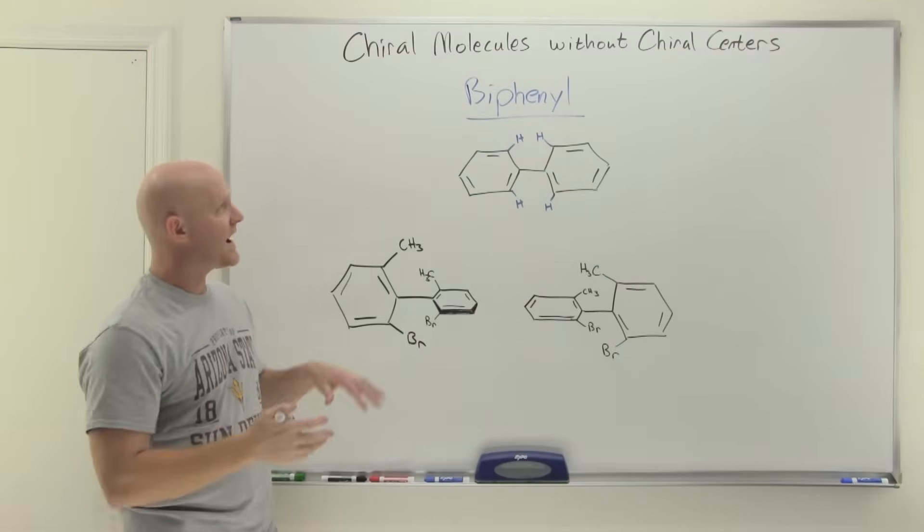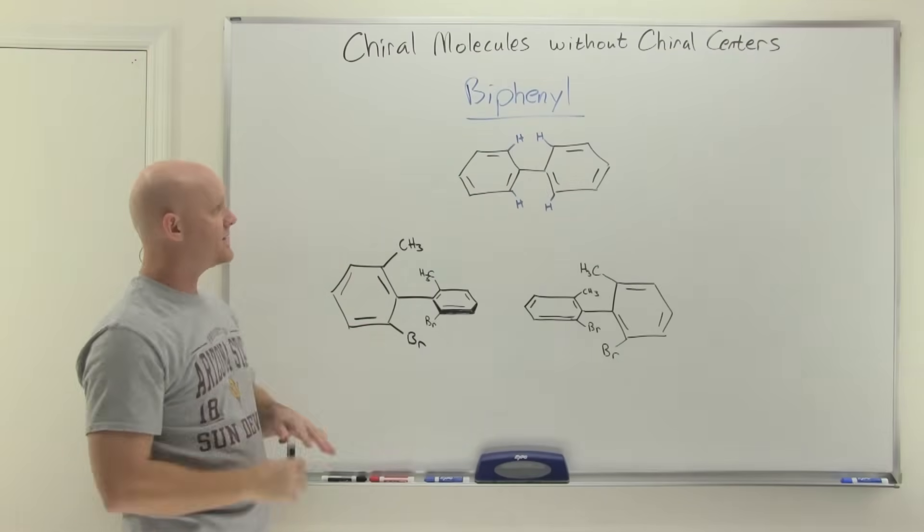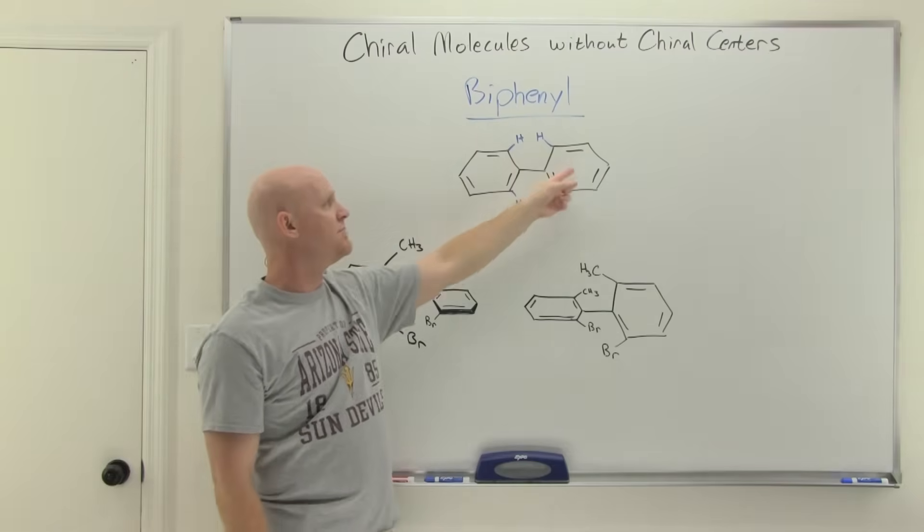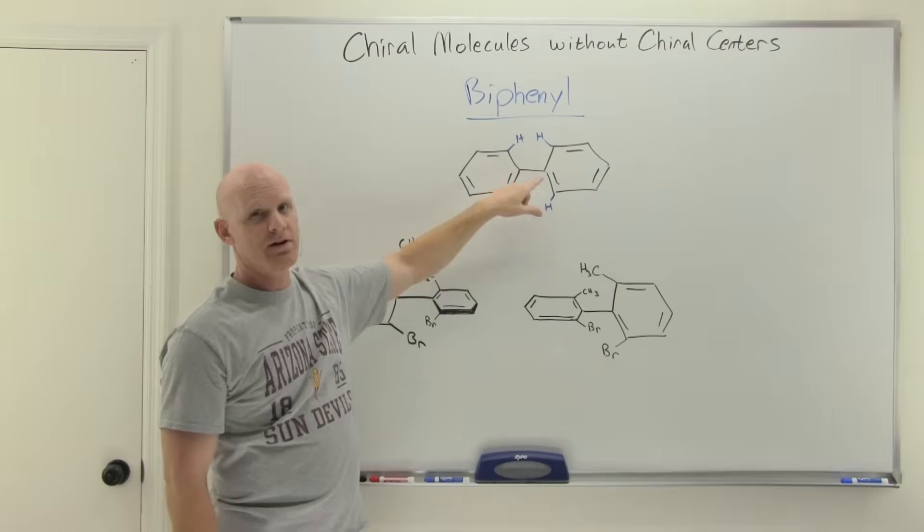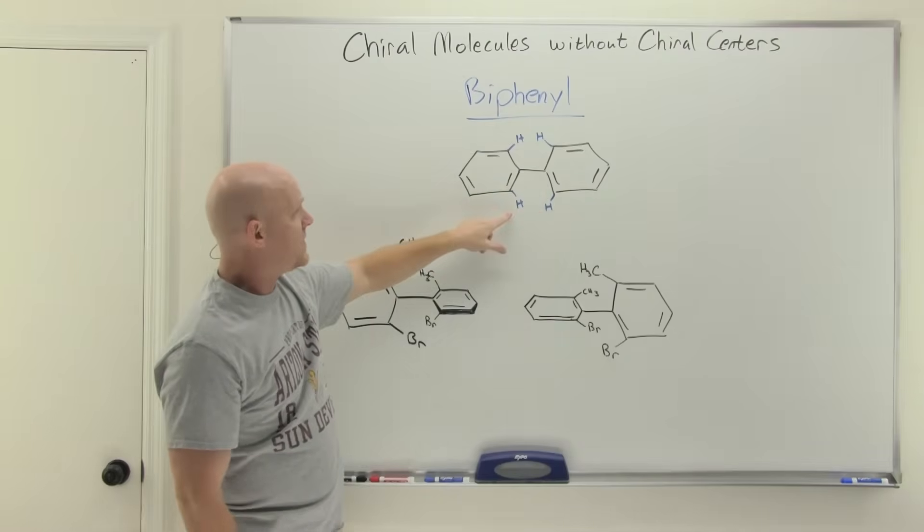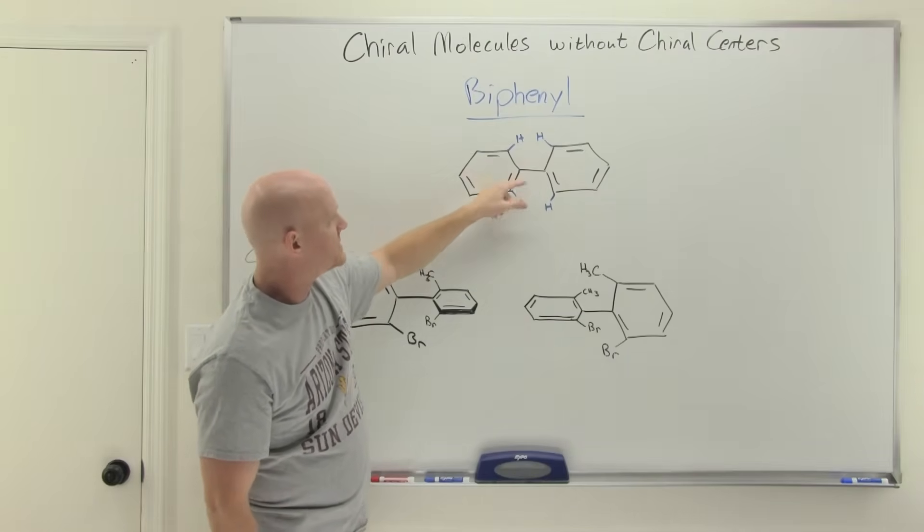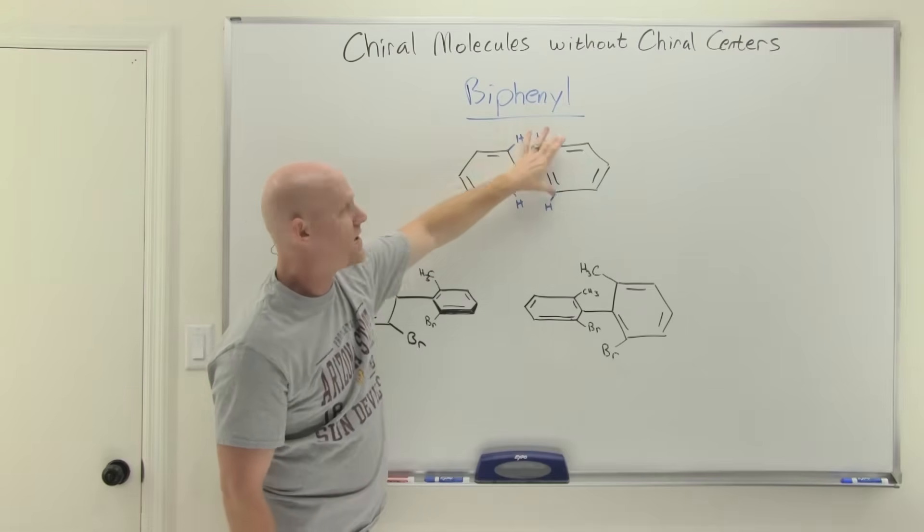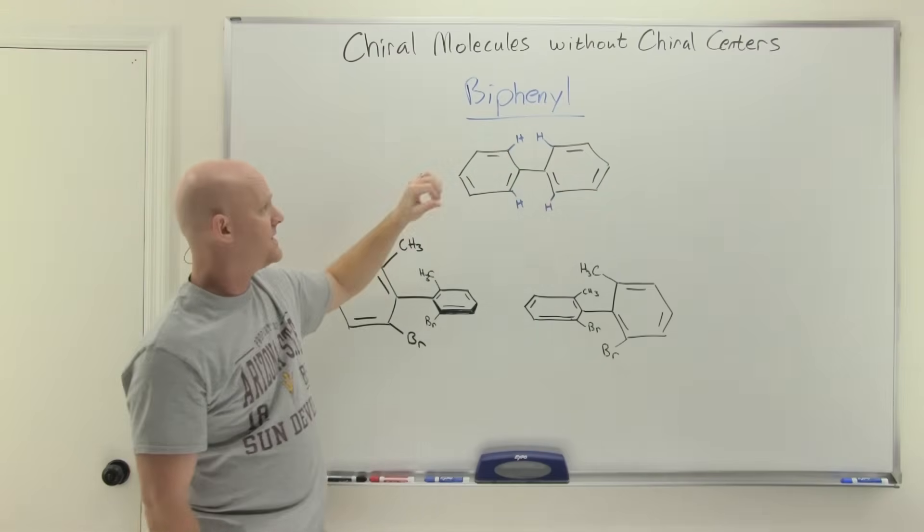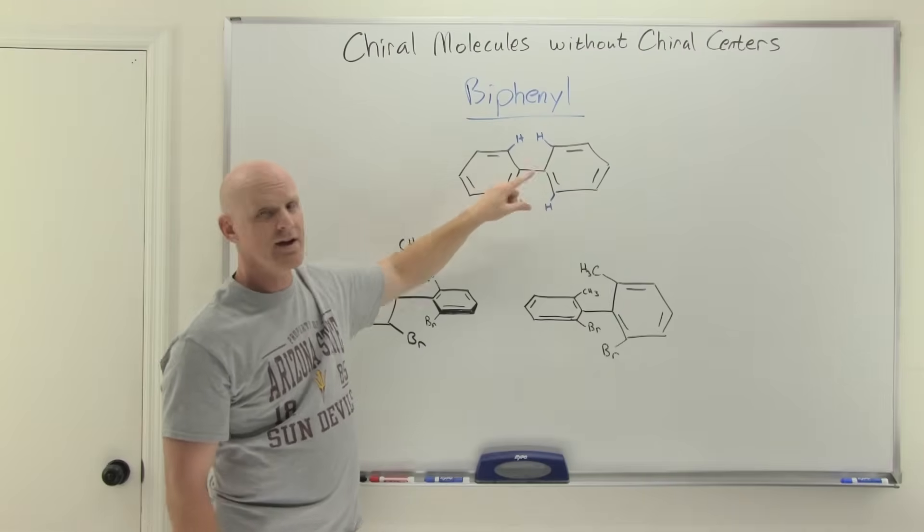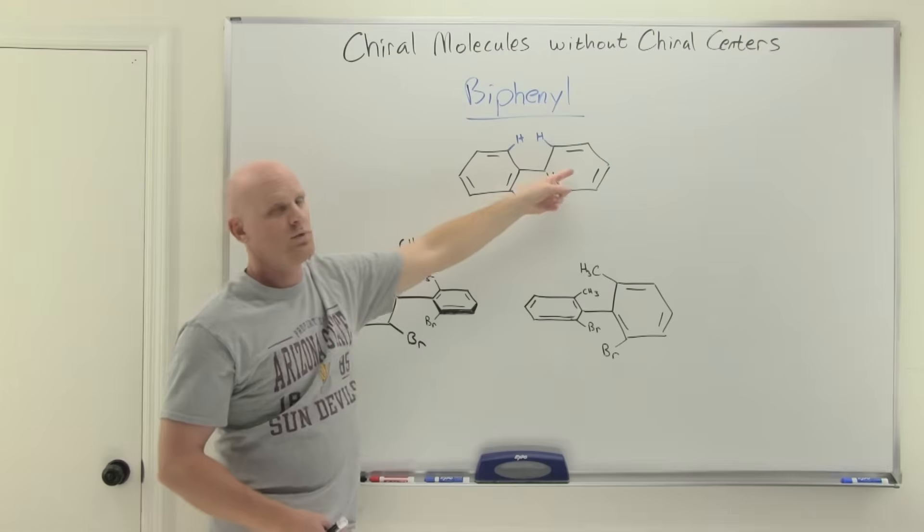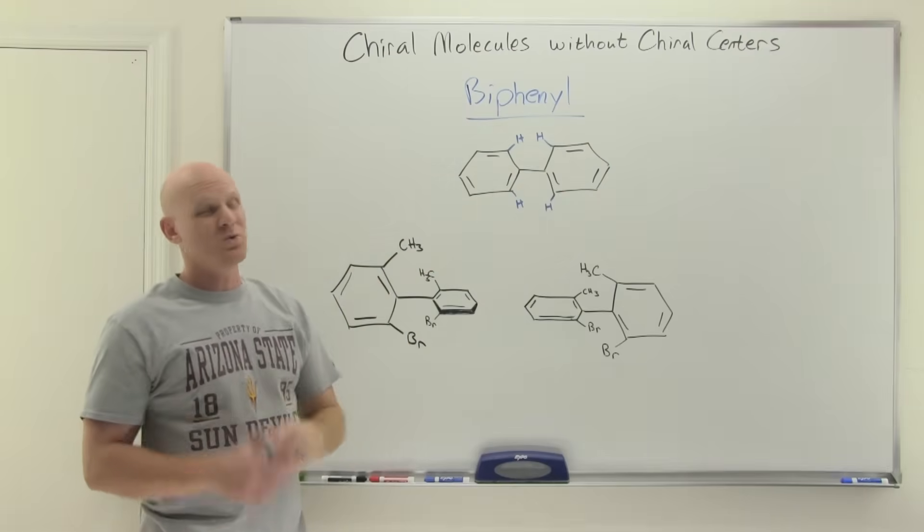So the next example we'll see of a chiral molecule that does not have any chiral centers is part of what we call the biphenyl system. And biphenyl just means you have two benzene rings directly bonded to each other. So in this case, we call the position right next to where they're bonded to each other, the ortho position. So there's four of these ortho positions, two on each ring. And the key is this, the single bond is not part of the ring, and it's just free to spin. These are just free to rotate around in circles relative to each other, unless you do one thing.